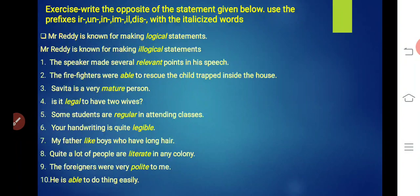Number two. The firefighters were able to rescue the child trapped inside the house. What will able become? Unable. U-N-A-B-L-E. The firefighters were unable to rescue the child trapped inside the house. Number three. Savita is a very mature person. What will mature become? Immature. I-M-M-A-T-U-R-E. Savita is a very immature person.